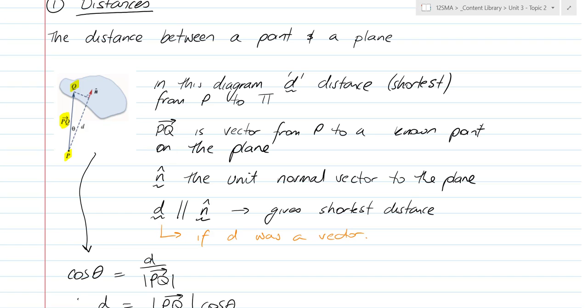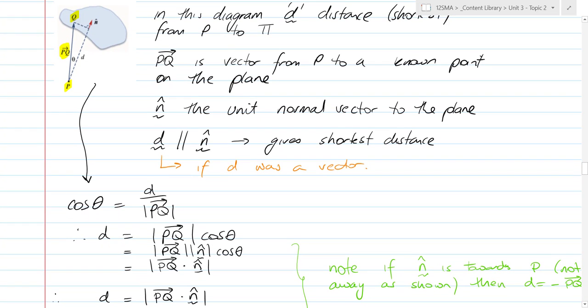Procedurally, this is not too bad. cos(θ) equals D — the thing we're trying to find, which is the shortest distance — over the magnitude of PQ. This is just right-angle trig with some vector stuff in it. We can rearrange that to get D equals PQ times cos(θ). And then we've done something magical here and inserted the magnitude of the unit vector N̂. The magnitude of the unit vector N̂ is one, which is why it's okay to insert it — we're just multiplying by one.